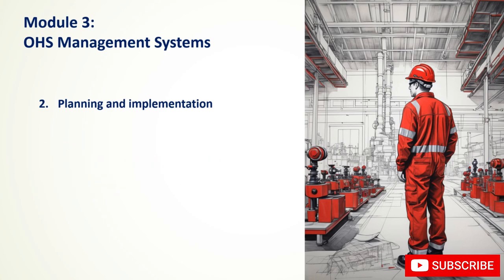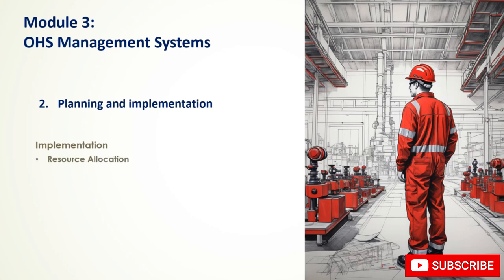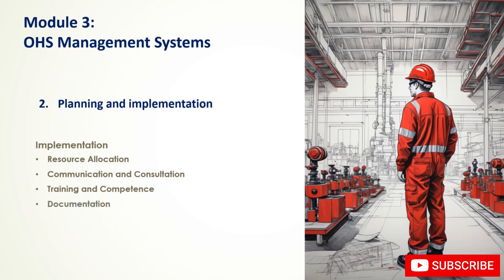Implementation is the process of putting the OHS plan into action. Key aspects include resource allocation — providing necessary budget, personnel, and equipment. Effective communication with employees about OHS risks, procedures, roles and responsibilities is crucial. Training and competence ensures employees have the knowledge and skills to perform jobs safely. Documentation maintains accurate records of OHS activities, training, incidents, and inspections. Emergency plans must be in place and regularly tested.